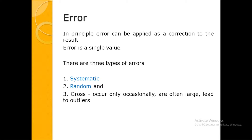Errors can be controlled and characterized. In principle, since you now know there is an error of plus one kilogram, you can apply a correction to the result. But that cannot be done with uncertainty. Error is a single value; uncertainty is always expressed as a range — like plus or minus two centimeters. We can have positive or negative errors. There are three types: systematic, random, and gross. We will not consider gross errors here as they amount to outliers.